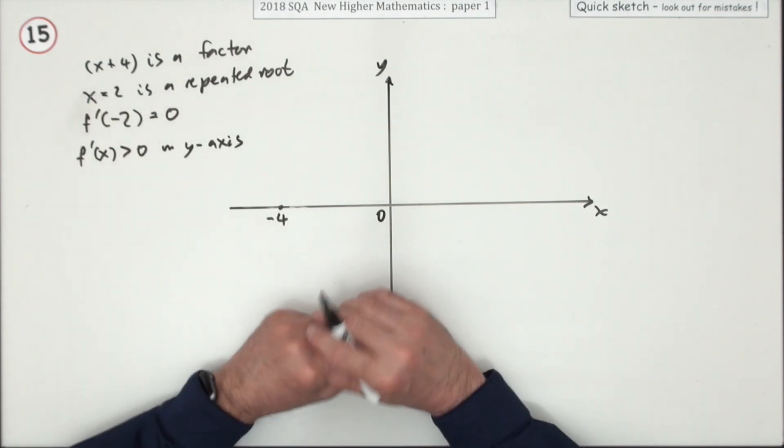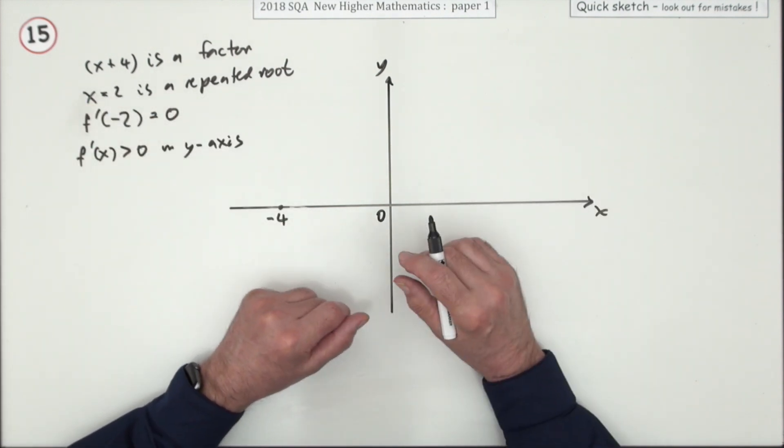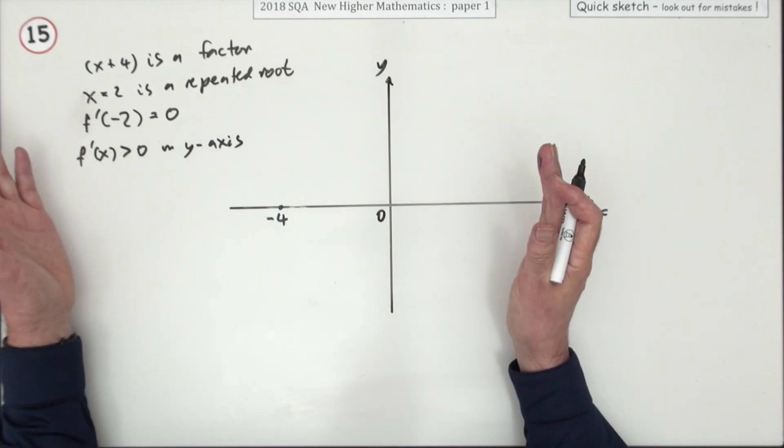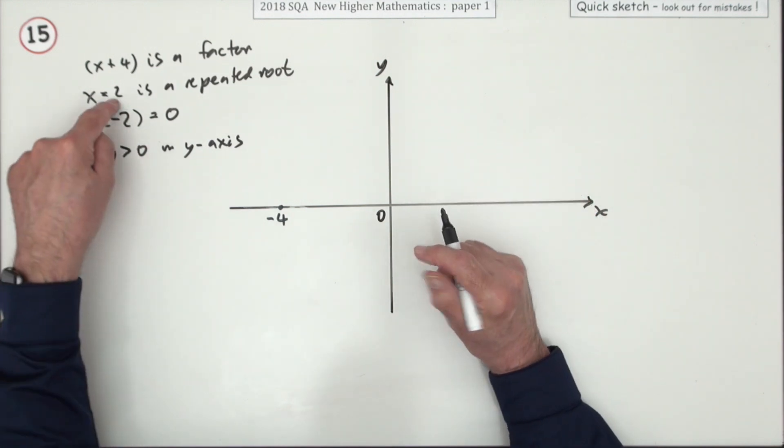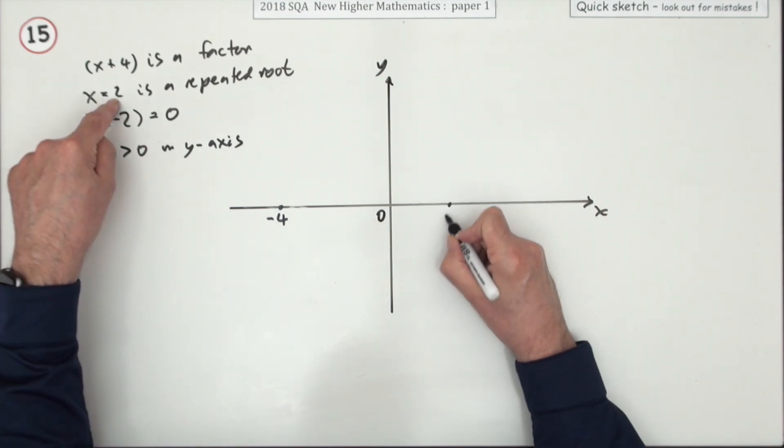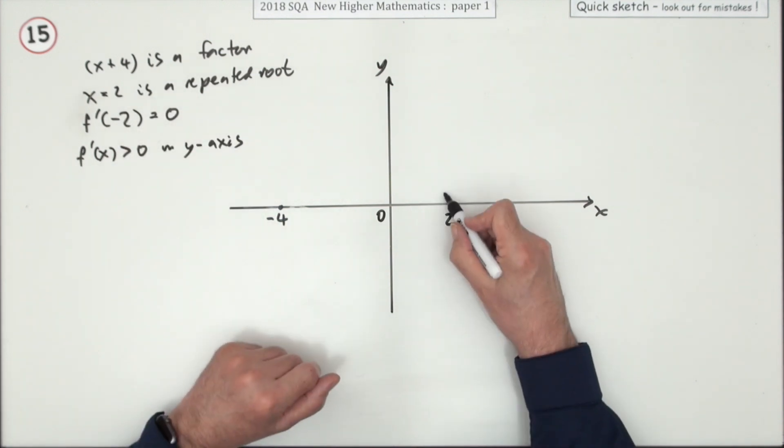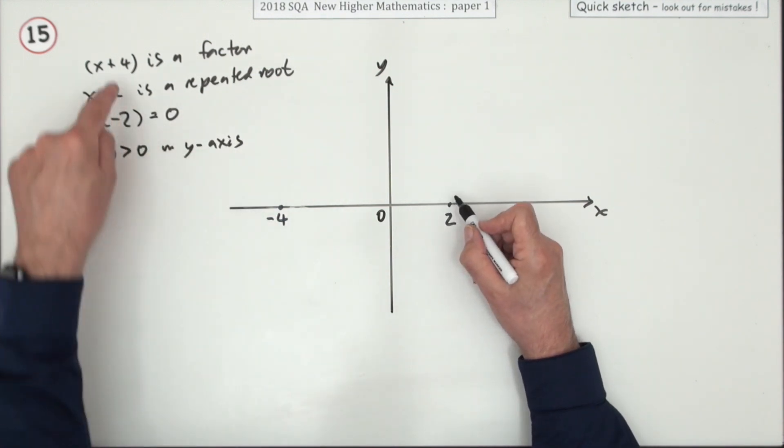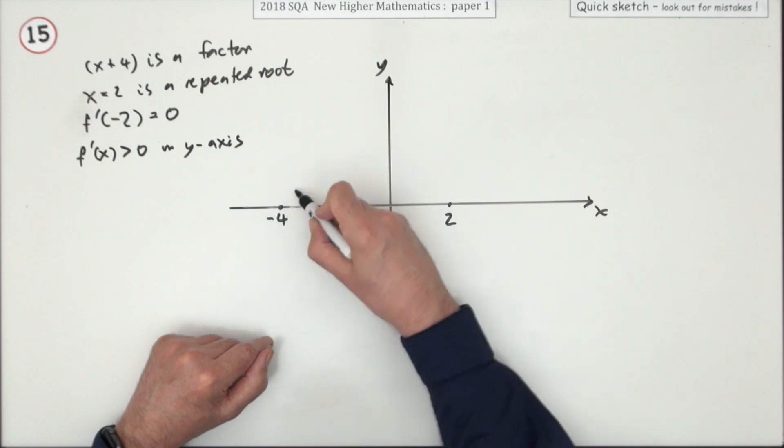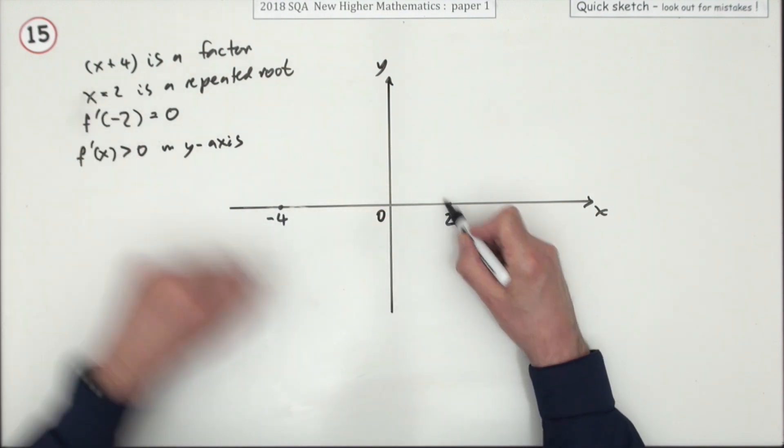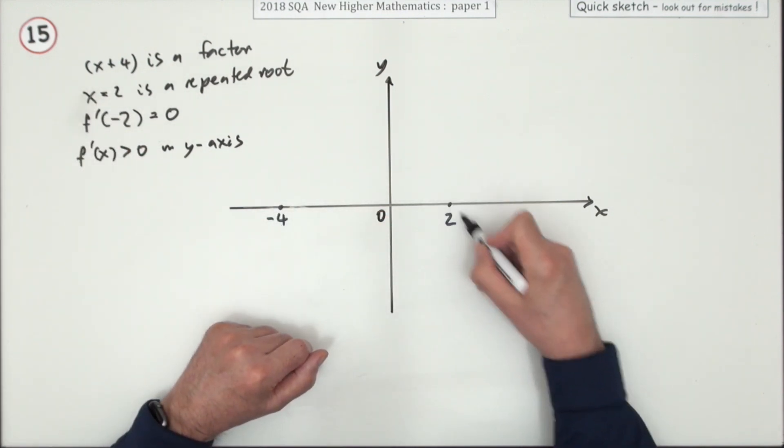x equals two is a repeated root. Two means we'll be about there, but repeated means it's a double hit there. Negative four is a clean cut, not sure which way, but two means it cuts both ways - it's a tangent point.